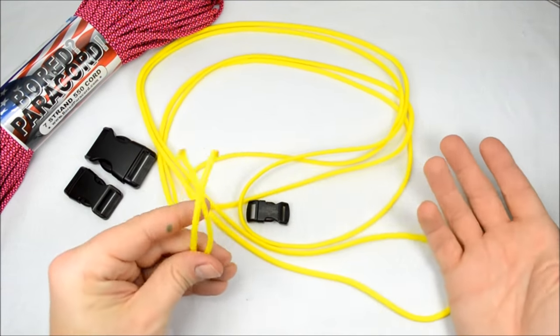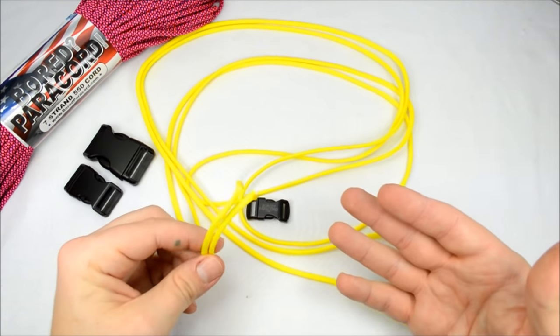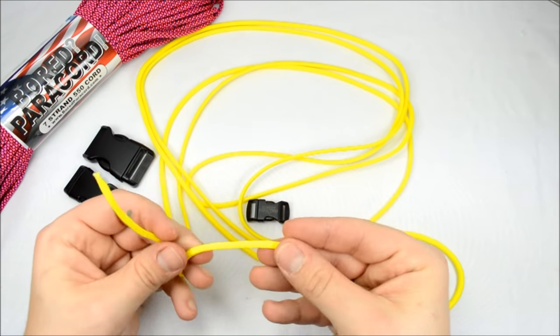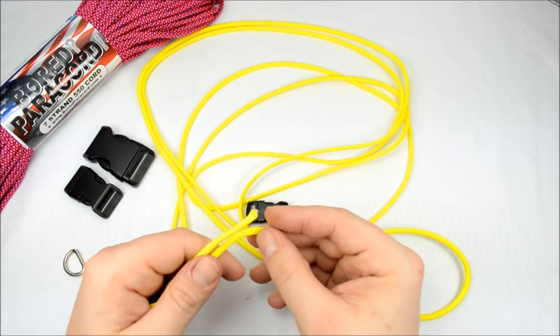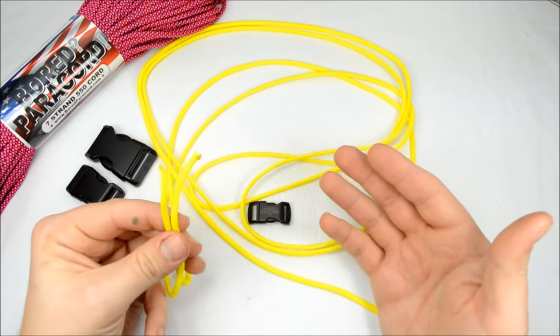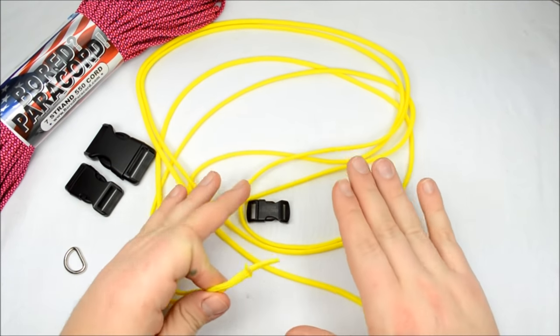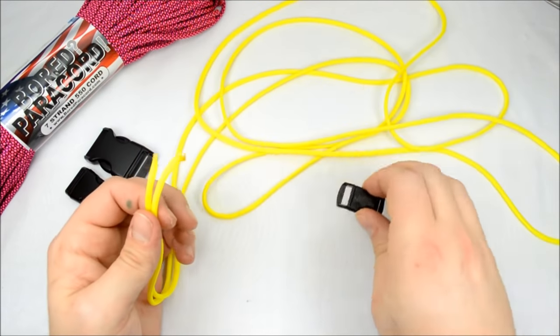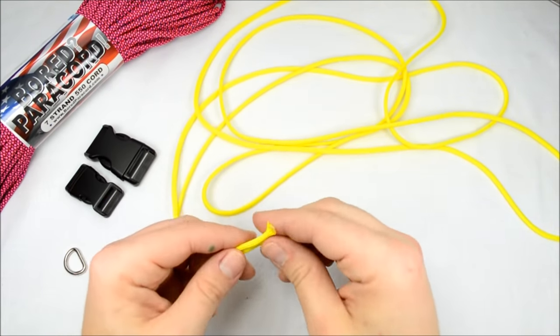This is only going to be maybe 9-10 inches long, but for every inch that you want for your dog collar, you're going to need a foot of paracord. So if you need a 14 inch collar, you need 14 feet. That's the real basic way for this style, this weave. So for every inch of dog collar, you need a foot of paracord. Real easy.